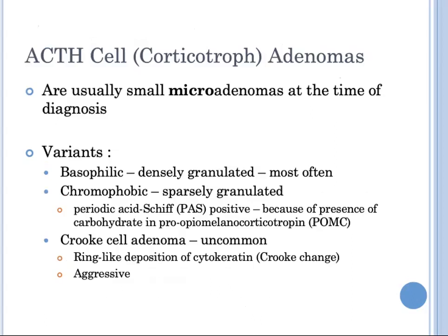Corticotrope adenomas are usually microadenomas at the time of diagnosis. They are most often basophilic or densely granulated, and occasionally chromophobic or sparsely granulated. Both variants stain positively with periodic acid-Schiff stain due to the presence of carbohydrate in pro-opiomelanocortin (POMC), a precursor of ACTH. A third variant is the Crooke cell adenoma, characterized by ring-like deposition of cytokeratin called the Crooke change, which has a more aggressive natural history compared with the other two subtypes.